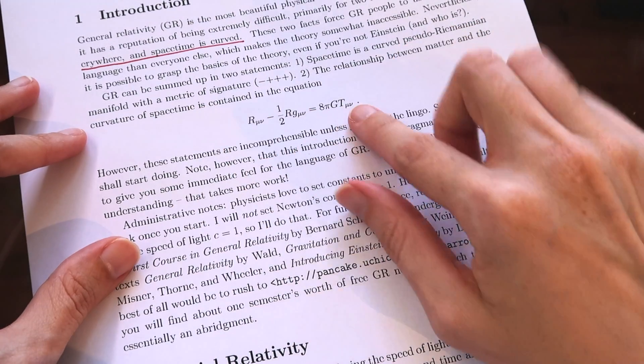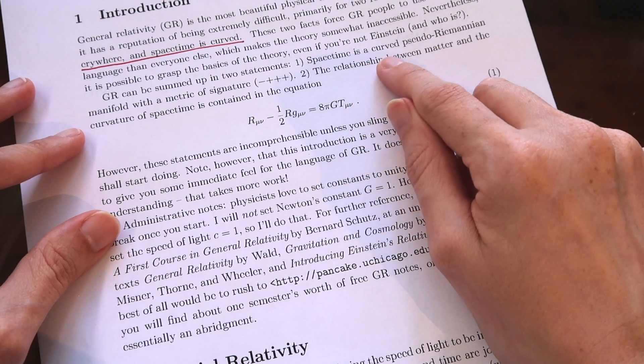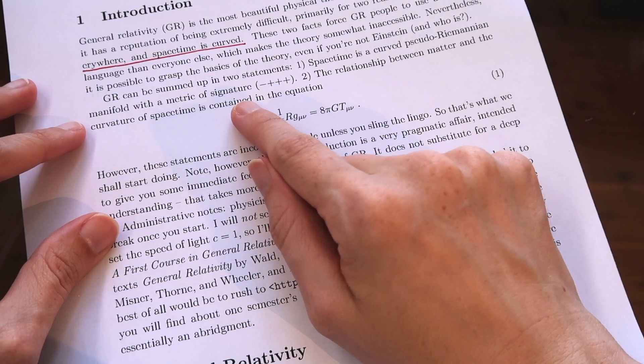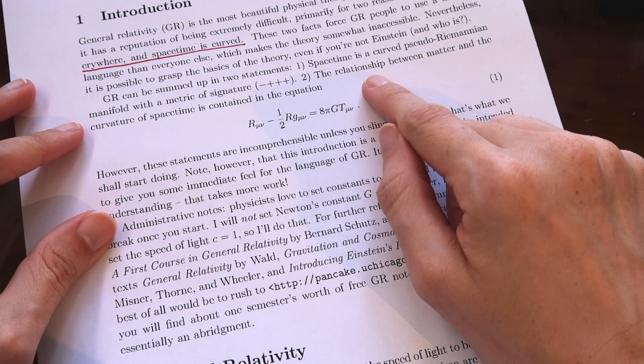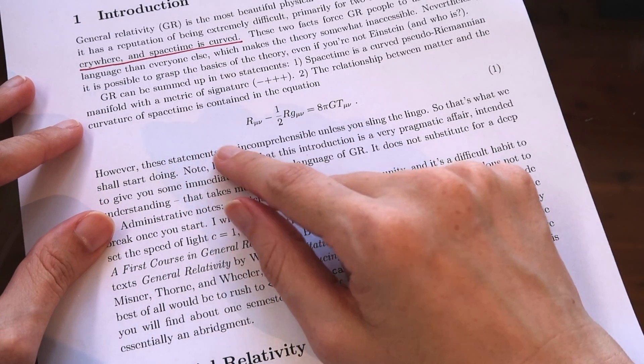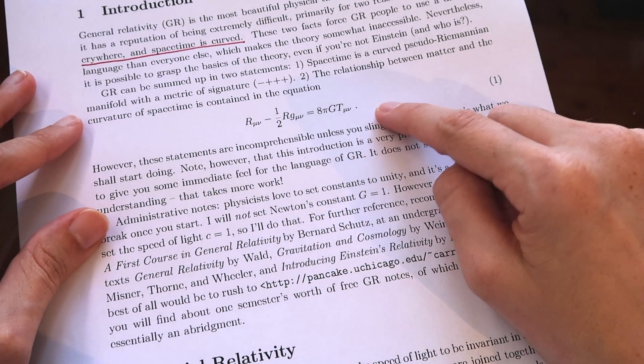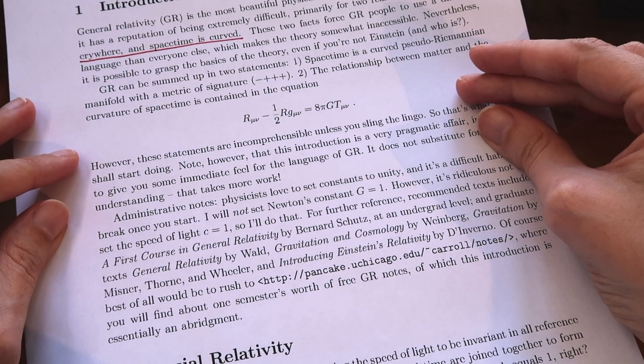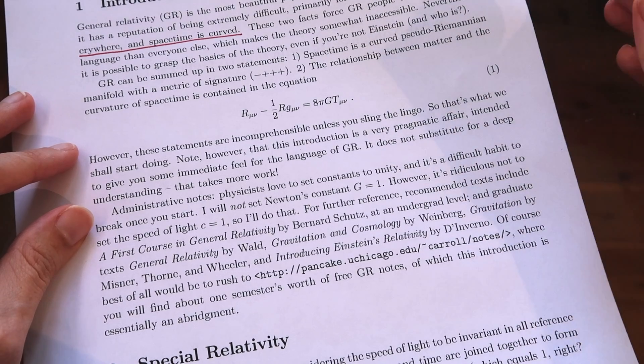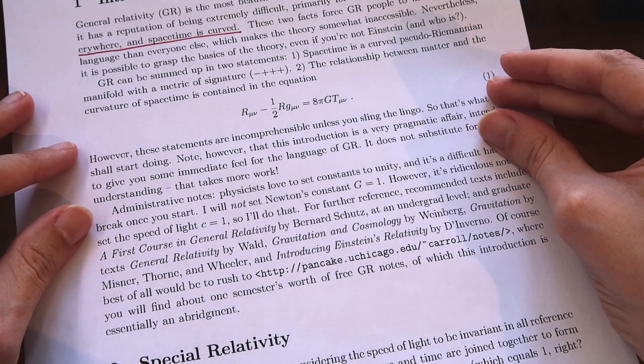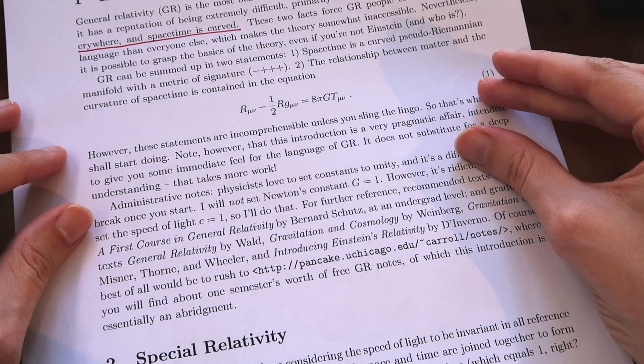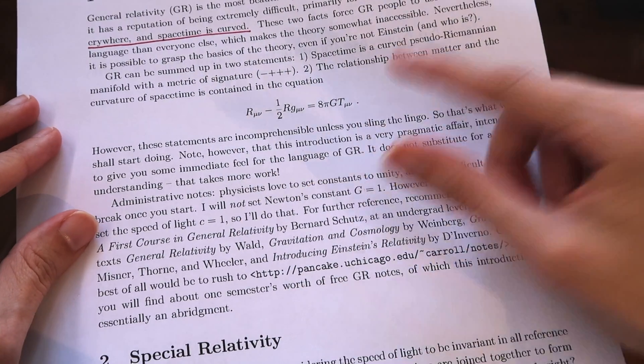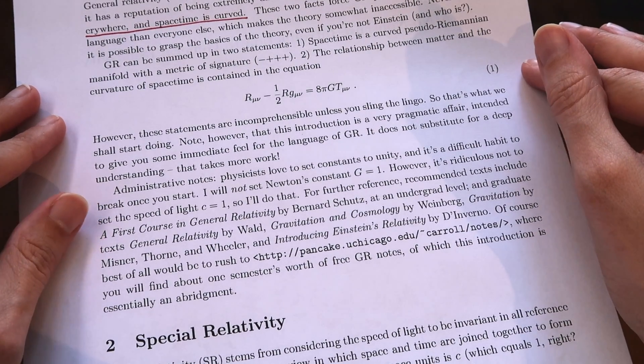However it claims that it is possible to grasp the basics of the theory. It sums up GR in two statements: one is that space time is a curved pseudo Riemannian manifold with a metric signature and two, the relationship between matter and the curvature of space time is contained in this equation which has become a bit of a famous equation, Einstein's equation, although it is very difficult to understand unless you understand the notation and most of the rest of these notes is doing just that, trying to get people to a point where they can actually understand this equation and I would agree it's not easy.